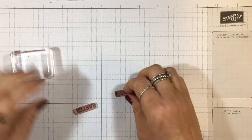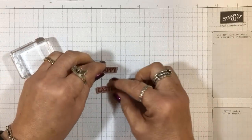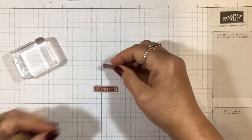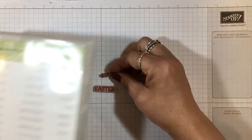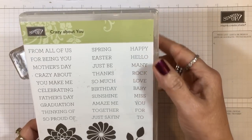For this I wanted to show you, I have this Happy Easter stamp, a well-loved stamp that I've used quite a bit. It's photopolymer from the Crazy About You stamp set in the annual catalog. What I do is I take it and put the stamp side down with the